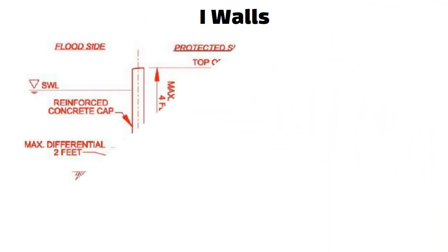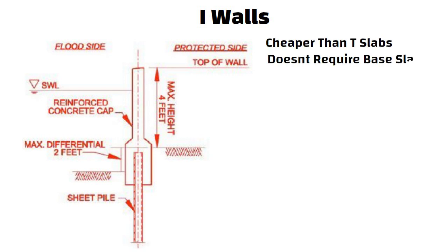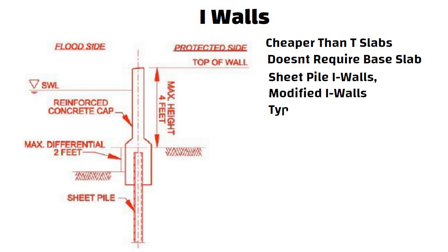Eye walls. Eye walls are cheaper than T slabs as they don't require a cantilever or base slab. Sheet pile eye walls, modified eye walls, and type II eye walls are some of the types of eye walls.